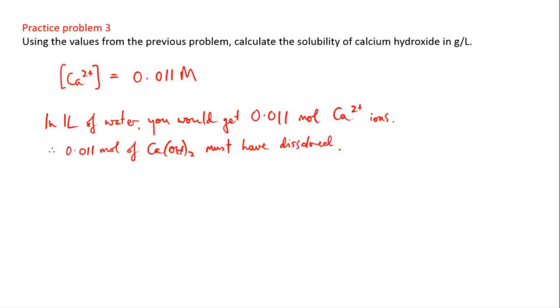So to turn this into a solubility in grams per liter, all we need to do is change this into grams, because if we know that 0.011 moles of calcium hydroxide dissolved in one liter, then converting this into grams will give us solubility in grams per liter.